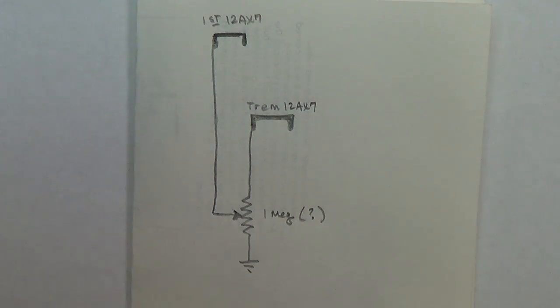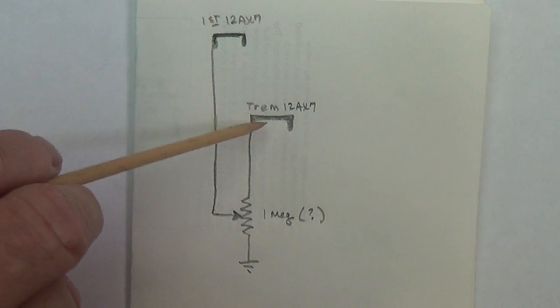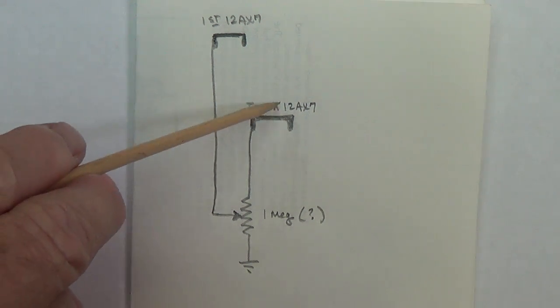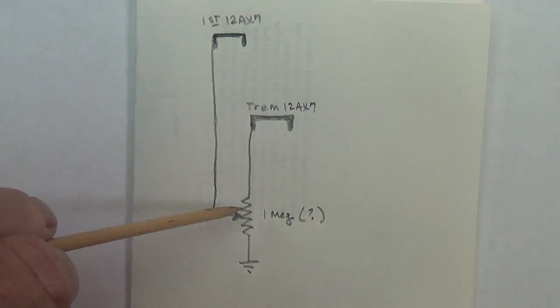Now for the tremolo intensity control I envision something very simple like this. I'm going to take that C output from the tremolo 12AX7 cathode and run it into either a 1 meg or a 500k pot. I'll have to do a little experimentation to see what value works best. The other end of the pot will be grounded.